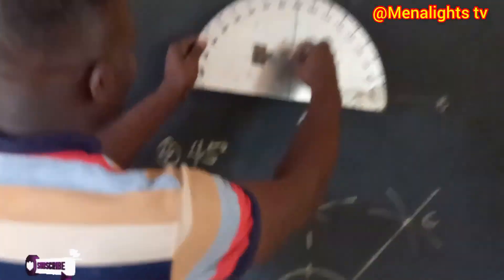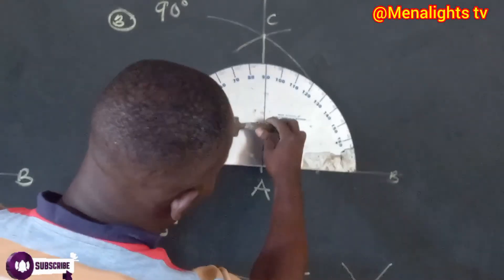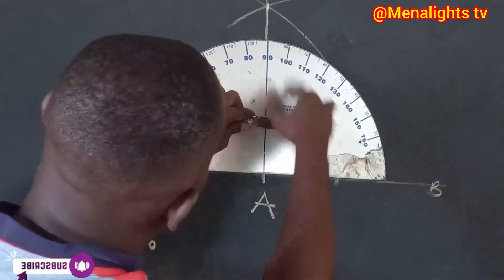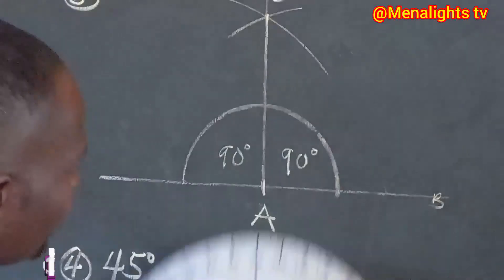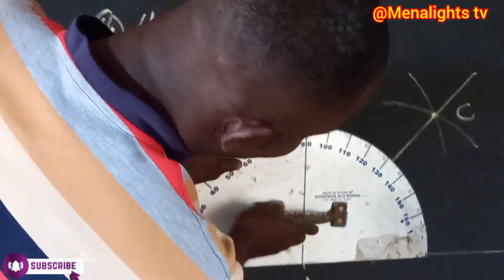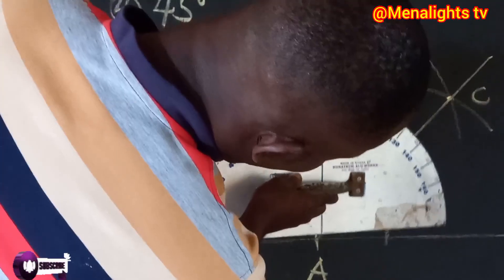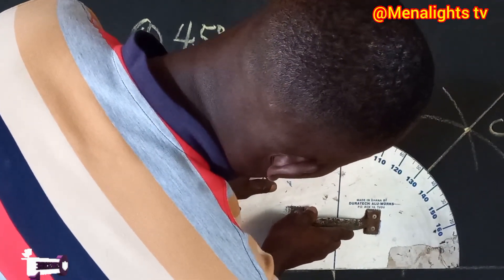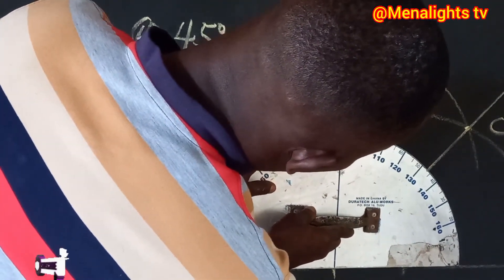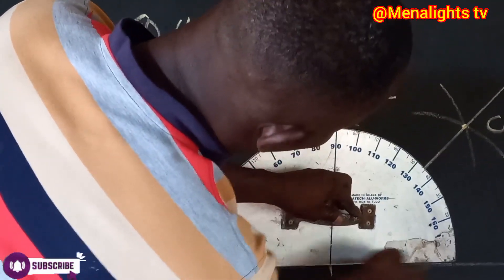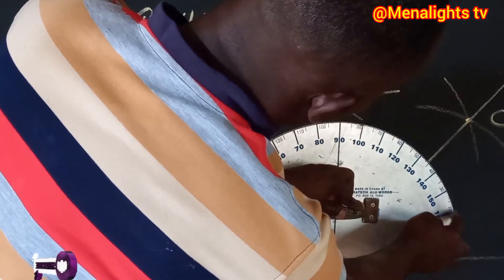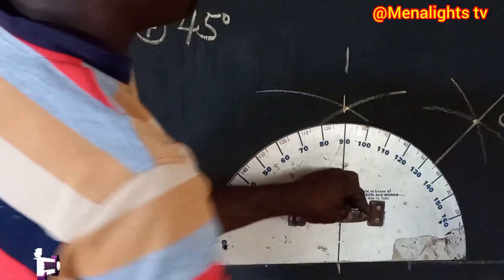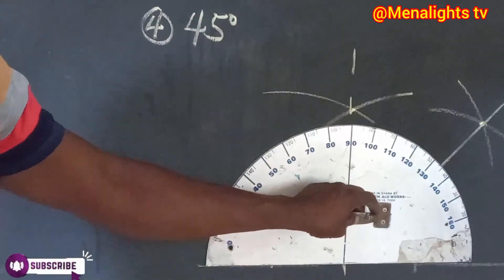Now let's go to 90 degrees — that one is the easiest, it's 90 there. Then for 45 degrees, the same way we have our 45 degrees here — from zero, then 20, 30, 40, and then 45 in between the 40 and the 50.